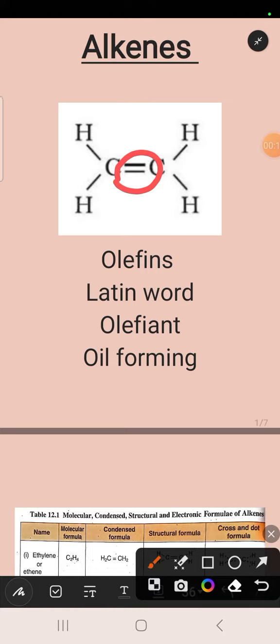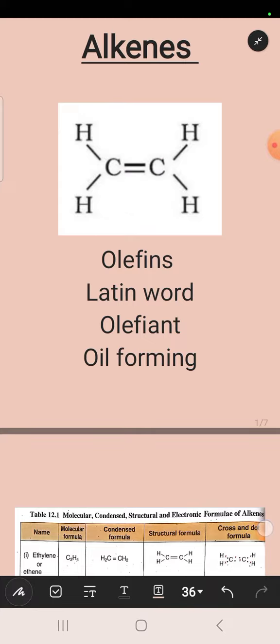Alkenes are also named as olefins. This word is derived from a Latin word, olefiant, and it means oil forming. These compounds form oily liquids when they react with halogens, which is why they are named as olefins.